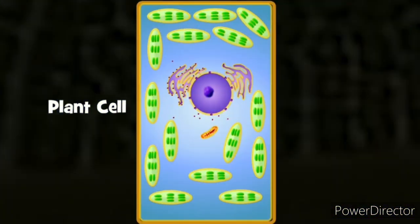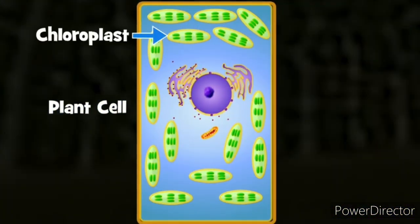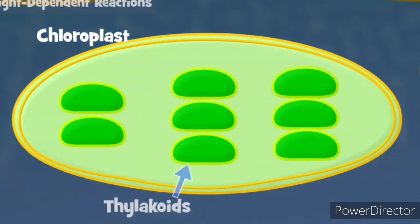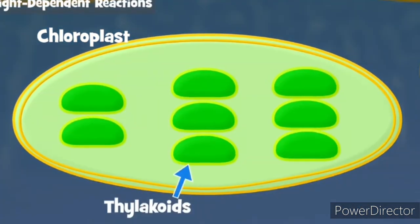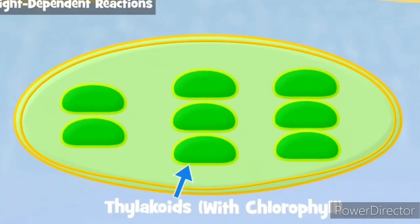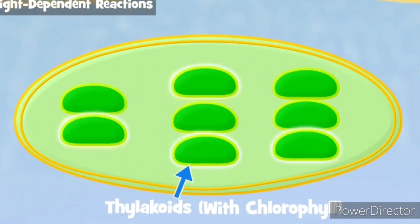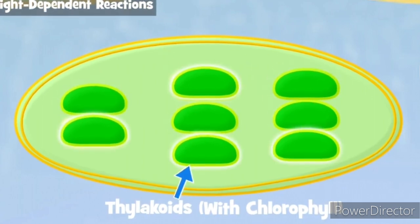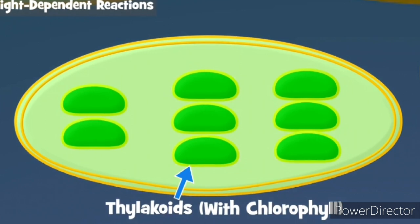Light reaction is the first stage of photosynthesis, which produces adenosine triphosphate and nicotinamide adenine dinucleotide phosphate by capturing the energy of sunlight with pigments called chlorophyll. Light reaction occurs in the thylakoid membrane of chloroplast.